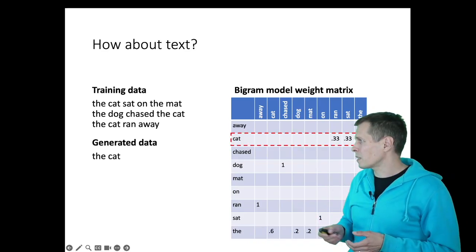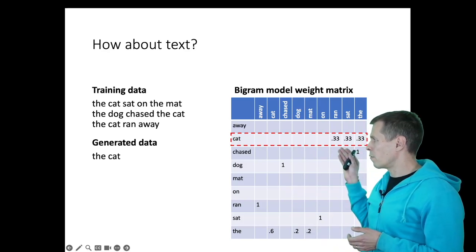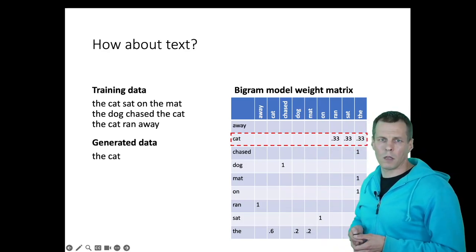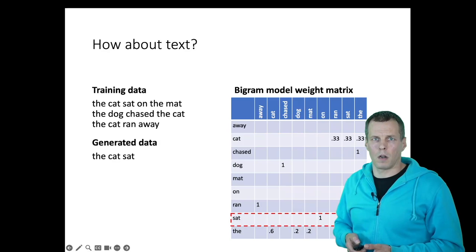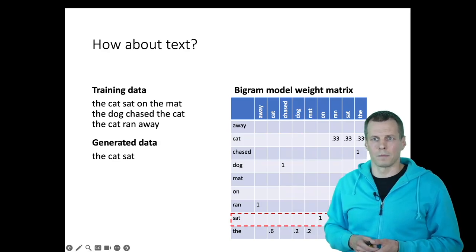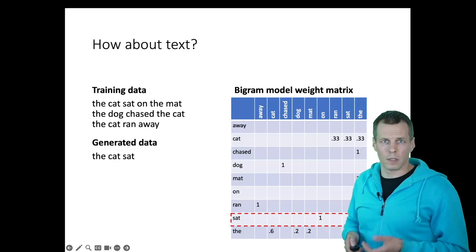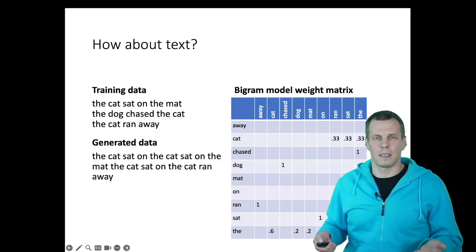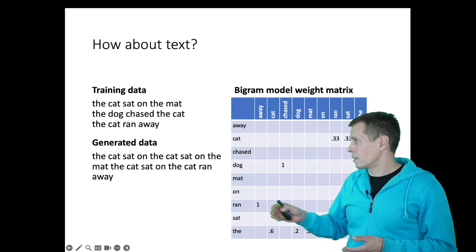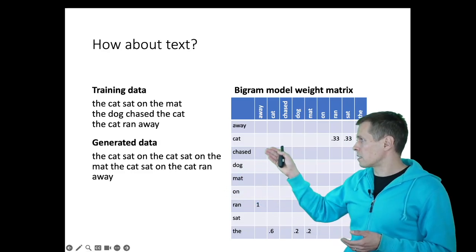Then after 'cat,' we have either 'ran,' 'sat,' and 'the' with equal probabilities. The model just picks randomly 'sat.' And after 'sat,' we always have 'on.' So that is what the model would predict, and so on until it predicts 'away,' which is the last word.